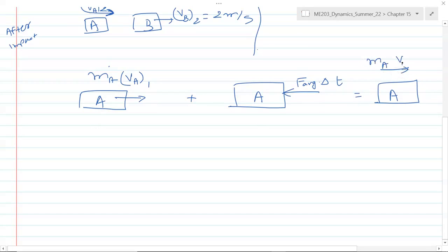We can apply this equation: m_A v_A1 plus F_avg delta t—impulse, so this force is coming from car B onto car A—equals m_A v_A2. We can substitute what we know here. Going right is positive as well.